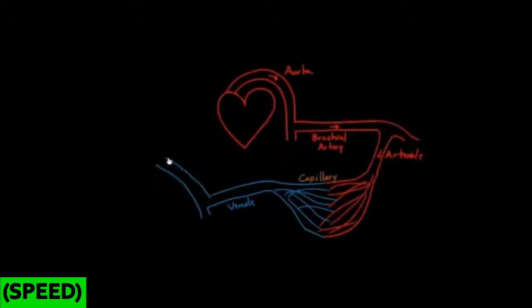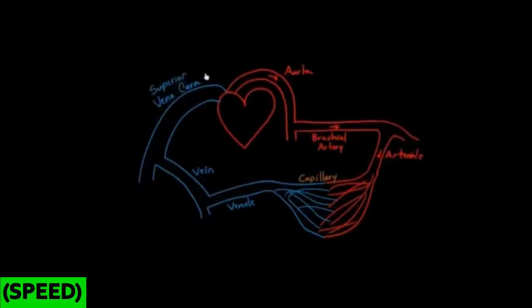And then it continues to go and get collected into a venule, which sounds a little bit like arteriole on the other side, right? We've got a vein over here, and then finally the blood gets collected in a large vein called the vena cava. There are actually two vena cavae, so this will be the superior vena cava. There's also an inferior vena cava, and the blood flow through this half continues to go around.